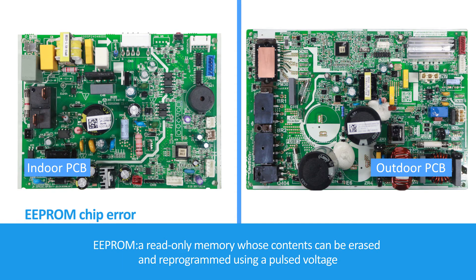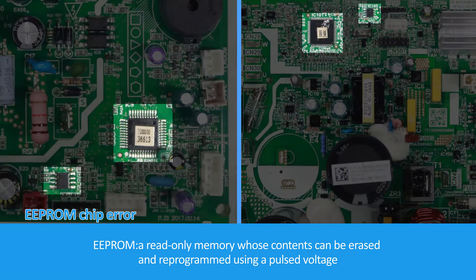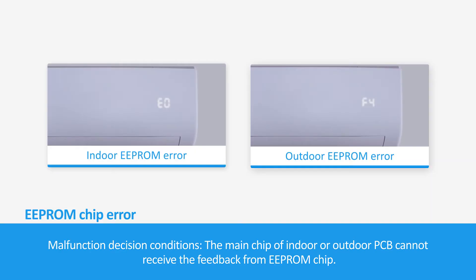EEPROM is a read-only memory whose contents can be erased and reprogrammed using a pulsed voltage. Malfunction decision conditions: the main chip of the indoor or outdoor PCB cannot receive the feedback from the EEPROM chip.